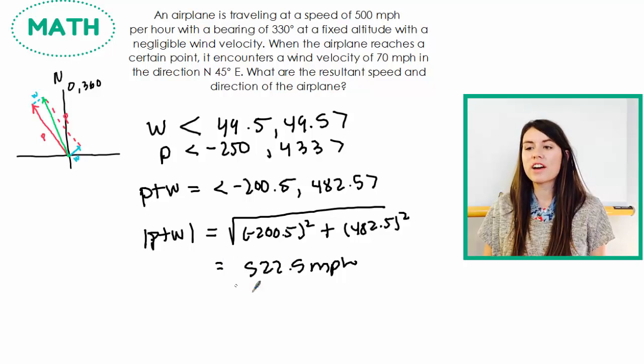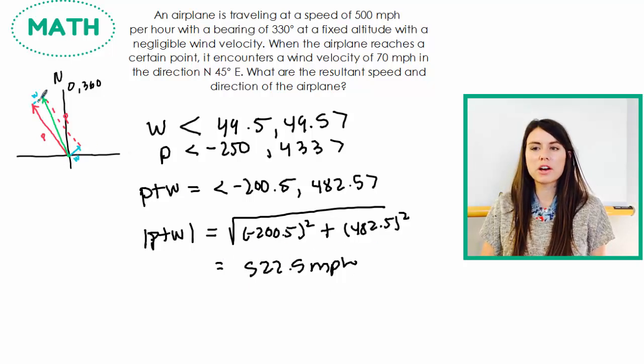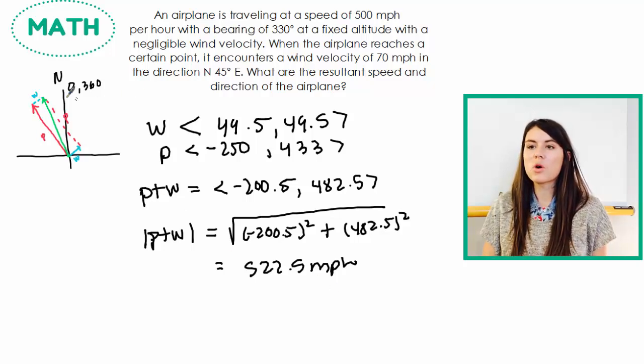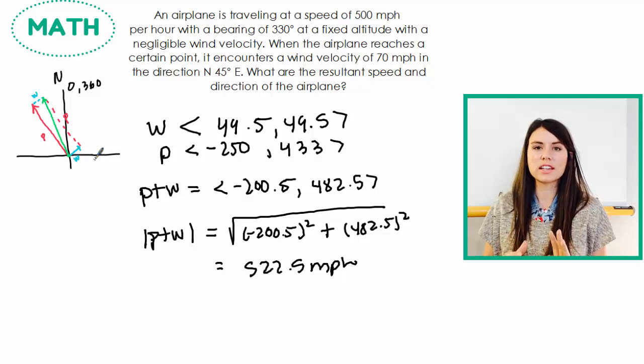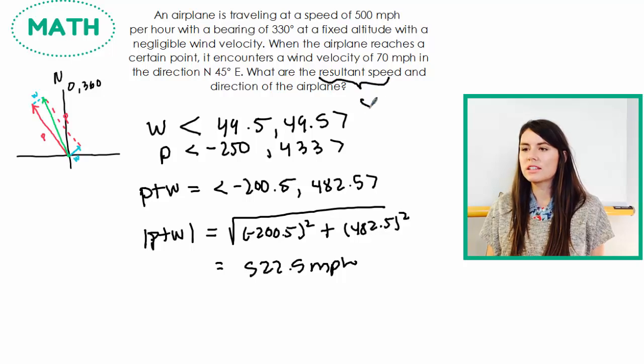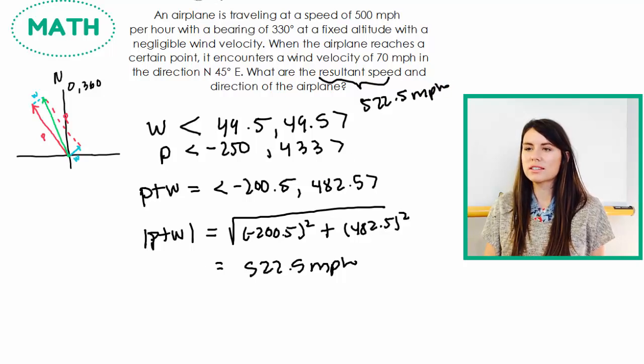So we know that it's going faster, but from our diagram, we also know that it's moved north a little bit more. So we want to figure out what angle am I traveling at now? How has the wind affected the angle or my bearing? So let's put this up here. My resultant speed, I just found, is 522.5 miles per hour. And then we're going to talk about how to find the angle.